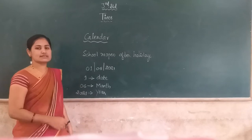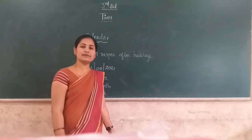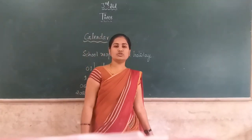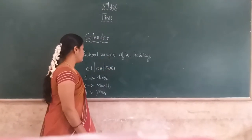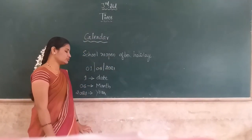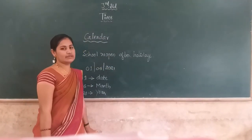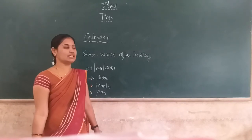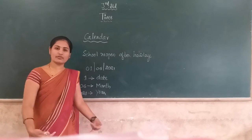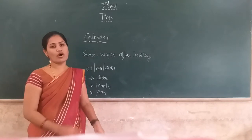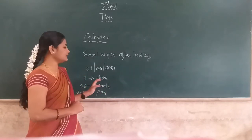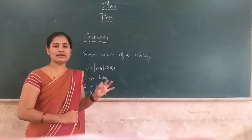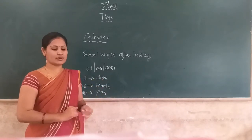The sixth month — counting January, February, March, April, May, June — the 1st day of June 2021 is the school reopening day after the holidays. This is the method of writing the day, month, and also year.